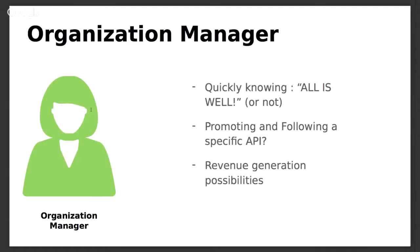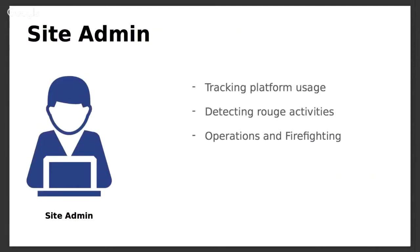The organization manager wants a quick glance to see if everything is fine. If their company has developed a new API in production, they want to see the usage trend and monitor it closely, along with possible revenue generation and monetization possibilities. The site admin is in charge of managing an API management platform — checking if API users are within their quota or usage scheme, and handling any rogue activities or firefighting work to keep APIs and the site functional.